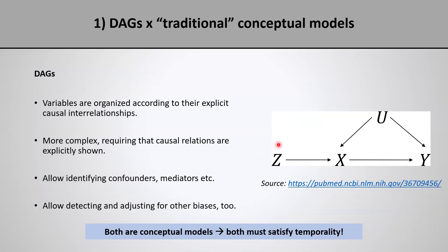Here we have an example of a very simple DAG with four variables: variable Z causing variable X, variable X causing variable Y, and variable U causing variables X and Y. Notice that an arrow between two variables simply indicates that one causes the other directly — meaning in a way that's not mediated by any other variables in the DAG. But absence of an arrow between two variables doesn't necessarily mean they're not closely related. For example, consider variables Z and Y: there is no arrow between them, yet Z does cause Y because Z causes X and X causes Y. Therefore, X is a mediator of the effect of Z on Y.